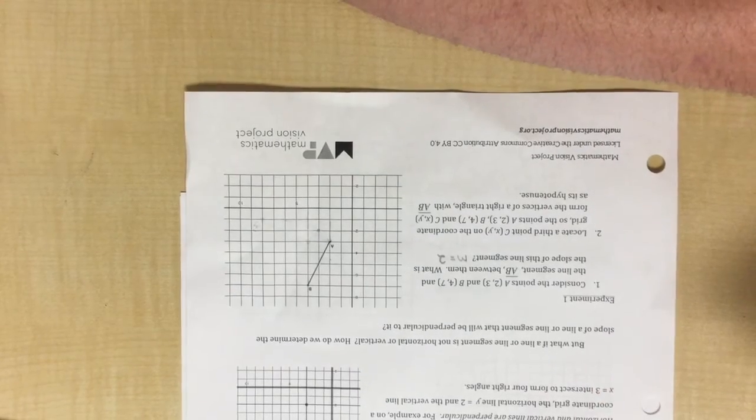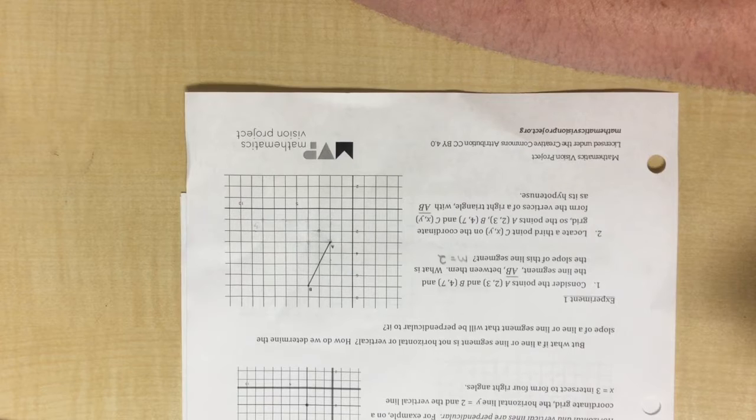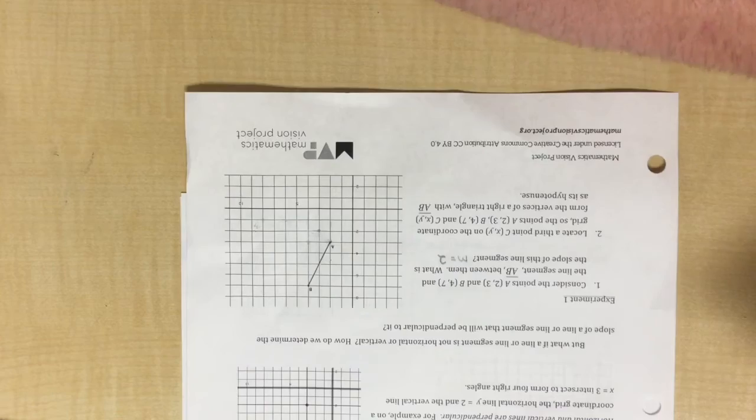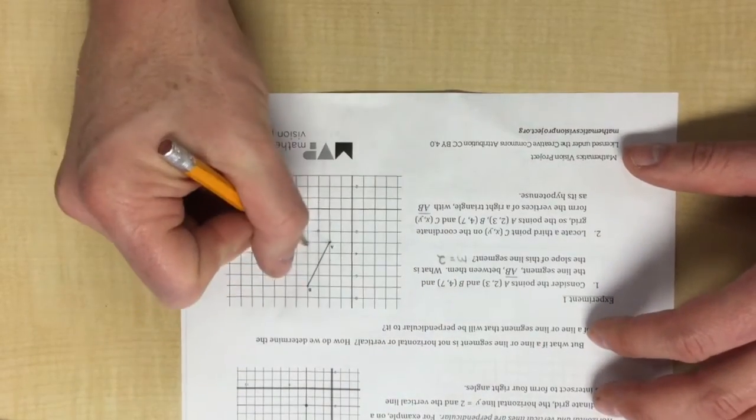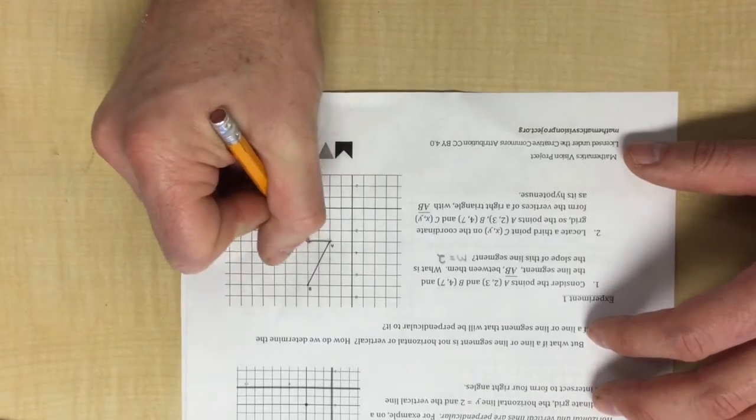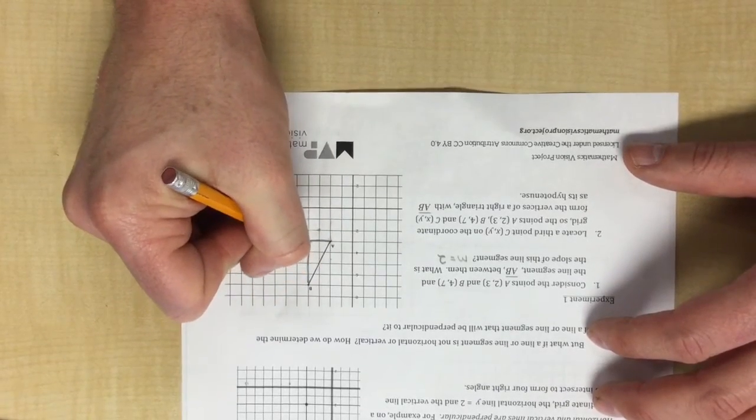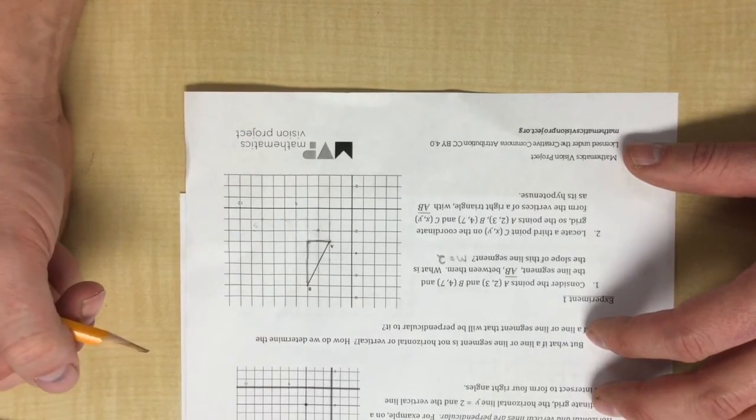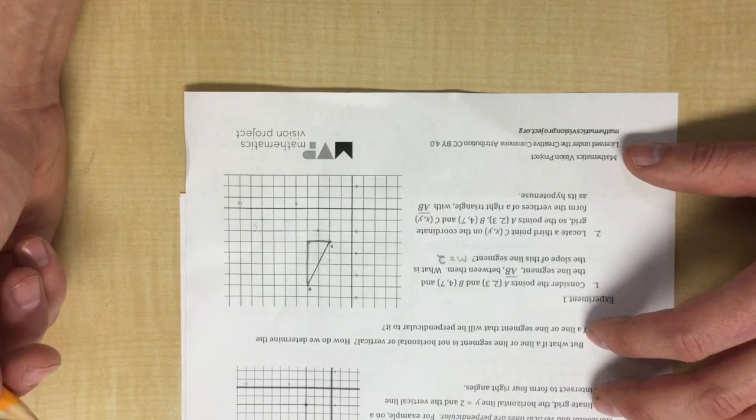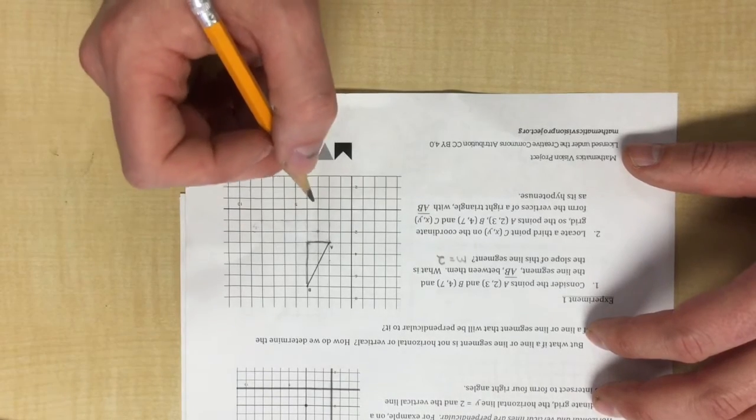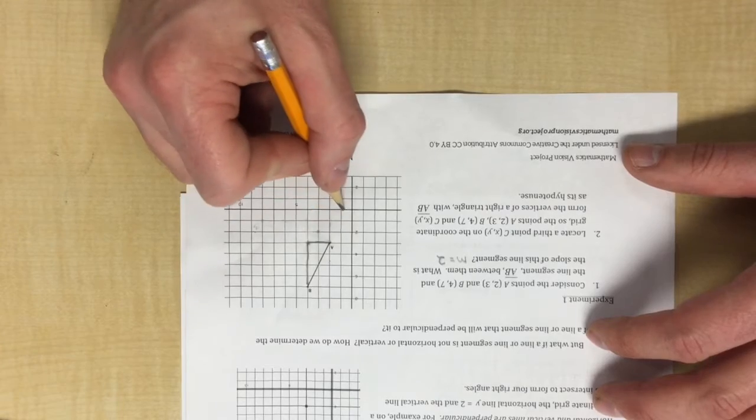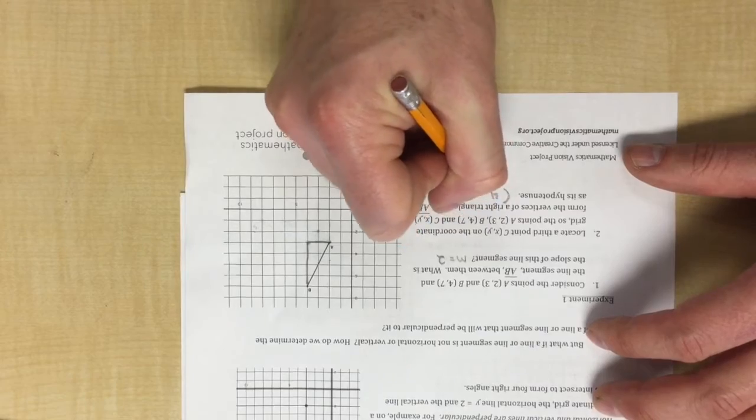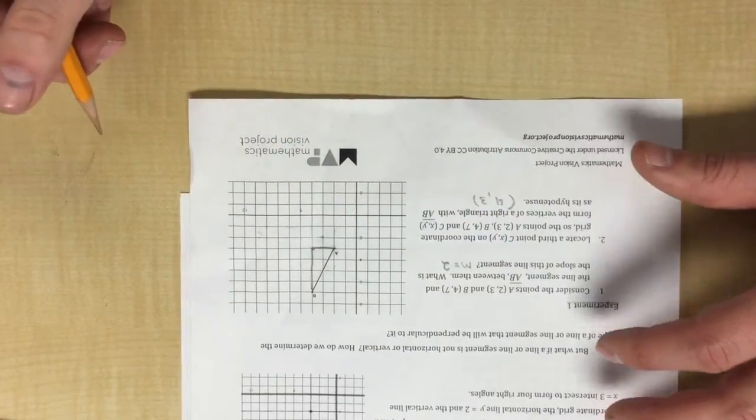Next one says locate a third point C(x,y) on the coordinate grid so that A, B, and C form vertices of a right triangle with AB as the hypotenuse. So I'm going to go ahead and mark that here. Let's go ahead and fill in that right triangle. You can see I also could have placed it up here, and that would have formed kind of the opposite right triangle, opposite but congruent. And then C is the point (4,3).